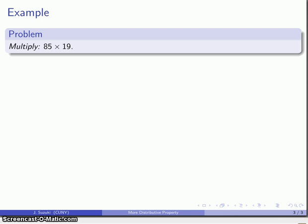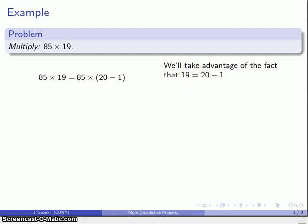So for example, let's consider the product 85 times 19. And this time we'll take advantage of the fact that 19 is 20 minus 1. The advantage to that is if I know I'm going to be working with these numbers, it's much easier to work with a 1 and a 2 than with a 1 and a 9. So let's go ahead and expand that out.